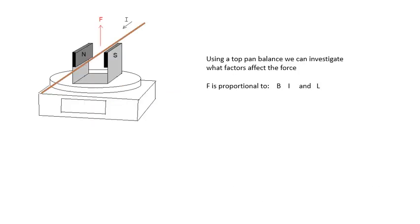For the size of the force — and this is one of your practical investigation things — we find that the force is proportional to the strength of the field, the current, and the length of the conductor in the field. In this experiment with a top-pan balance, you have some magnets on top of the balance and there's a wire; the wire gets pushed upwards, and then because of Newton's third law, the magnets are pushed downwards and we get a reading on the balance. The reading on the balance will be proportional to the force acting on the wire, and we find that F is proportional to B, I, and L.